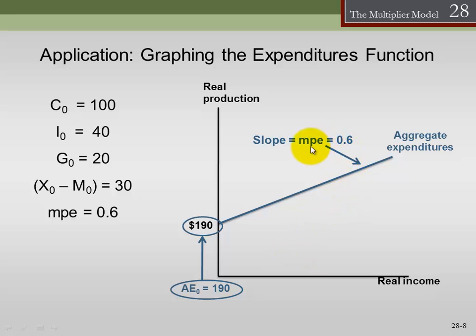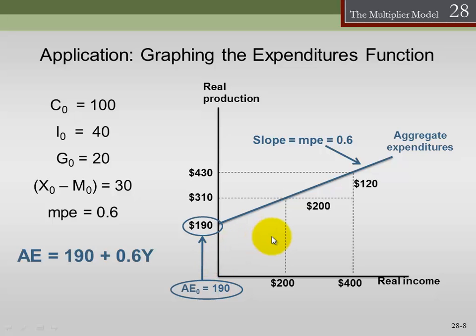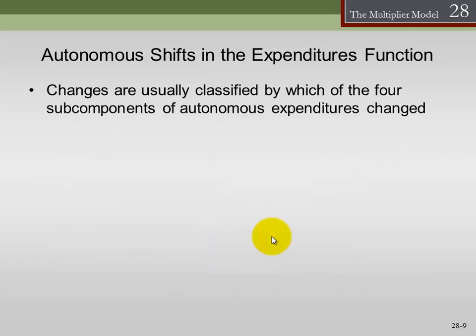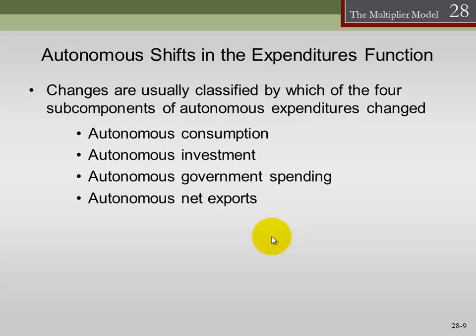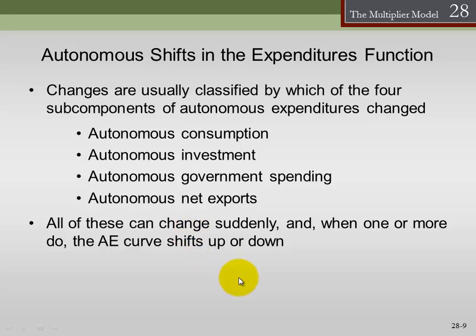Autonomous shifts in the expenditure function are usually classified by which of the four subcomponents of autonomous expenditures shifts. These are shocks to the expenditure function. All of these components can change suddenly, and when one or more do, aggregate expenditure shifts up or down. We can talk about these as autonomous or exogenous shocks outside the system, because everything that affects the autonomous components of expenditure has to be outside of our model.